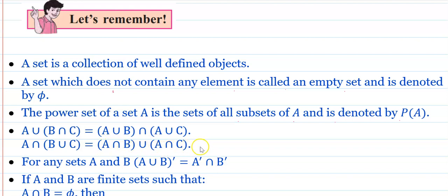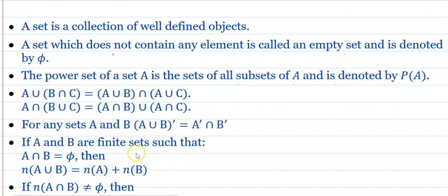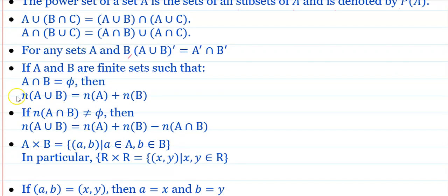For any sets A and B, A union B complement equals A complement intersection B complement. If A and B are finite sets such that A intersection B is empty (phi), then n(A union B) equals n(A) plus n(B).